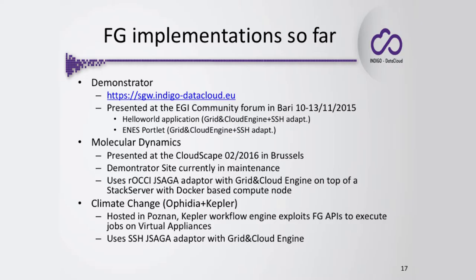Another more complex portlet called NS provided a complex user interface and executed something via SSH with the grid and cloud engine. Later, in February, during the Cloudscape conference in Brussels, we demonstrated two Indigo use cases. The first, called molecular dynamics, was using the grid and cloud engine with its ROCCI CCI JSAG adapter. We had a Docker container providing all the software for the molecular dynamics. The Future Gateway APIs were capable of instantiating the VM according to an input, executing the molecular dynamics case, and retrieving the results.